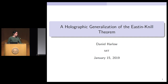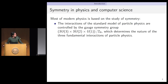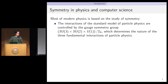Let me begin by reminding you that in physics, symmetry is our favorite thing — symmetry is what we spend most of our time thinking and talking about. For example, in the standard model of particle physics we talk about the gauge symmetry group SU(3) × SU(2) × U(1) mod Z6 — sometimes people forget the Z6. Knowing this group and the structure of quantum field theory tells you most of what you need to know about the three fundamental interactions. SU(3) is the strong force, and SU(2) × U(1) together are the electroweak force, with electromagnetism being some combination of those two.